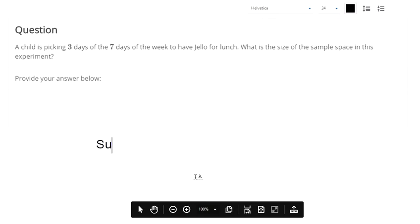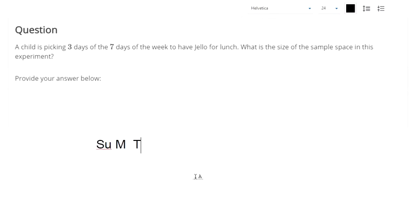You've got Sunday, Monday, Tuesday, Wednesday, Thursday, Friday, and Saturday. So one possible event is Sunday, Monday, Tuesday, or you could have Sunday, Monday, Wednesday, or Sunday, Monday, Thursday. That's going to take a while, right?